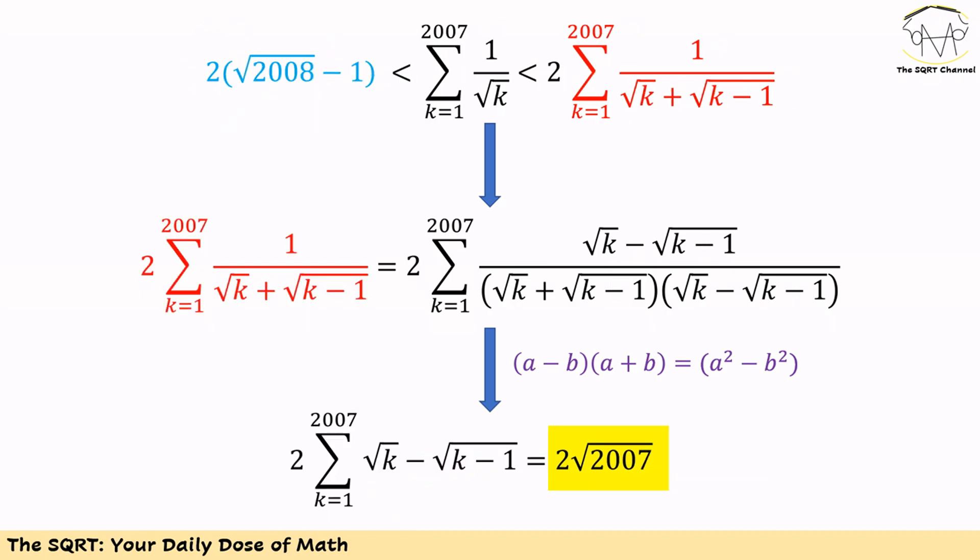For the upper bound, we can use exactly the same thing. This way, we can show that 1 over (√k + √(k-1)) is actually equal to √k minus √(k-1). Then we have a new telescoping series and the answer for it is going to be 2 times square root of 2007.